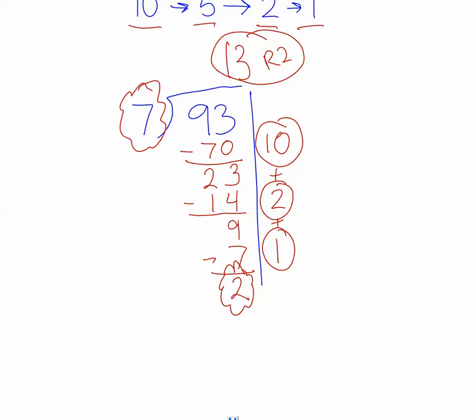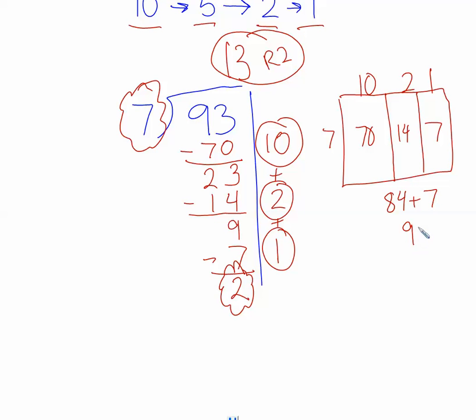Now, for homework tonight, what I would like you to do is check those two. So I'm going to make an array here. I know my 10s, I know my 2s, and I know my 1s. I'm going to multiply all those by 7. I know that 7 times 10 is 70. I know that 7 times 2 is 14, and 7 times 1 is 7. So if I add all those up, 70 plus 14, I know that's 84, plus 7 equals 93, which is what we started with. So we know we got that problem right.